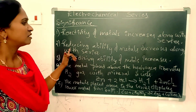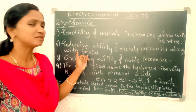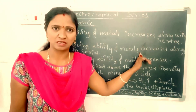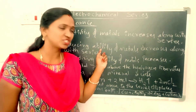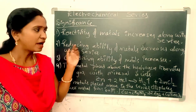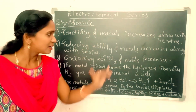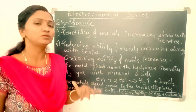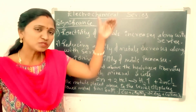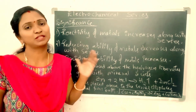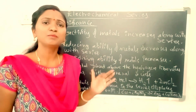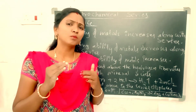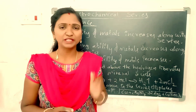Second significance: reducing ability of metals decreases along the series. The metal which is present at the top position has more reducing capacity, and from top to bottom the reducing capacity decreases. So the metal with more negative potential is the strong reducing agent.